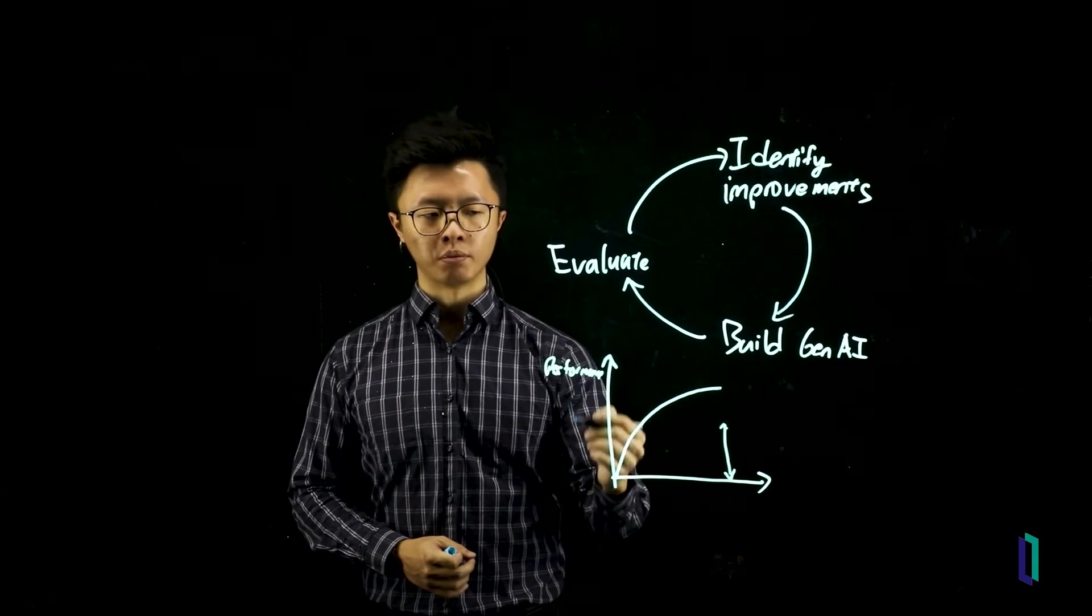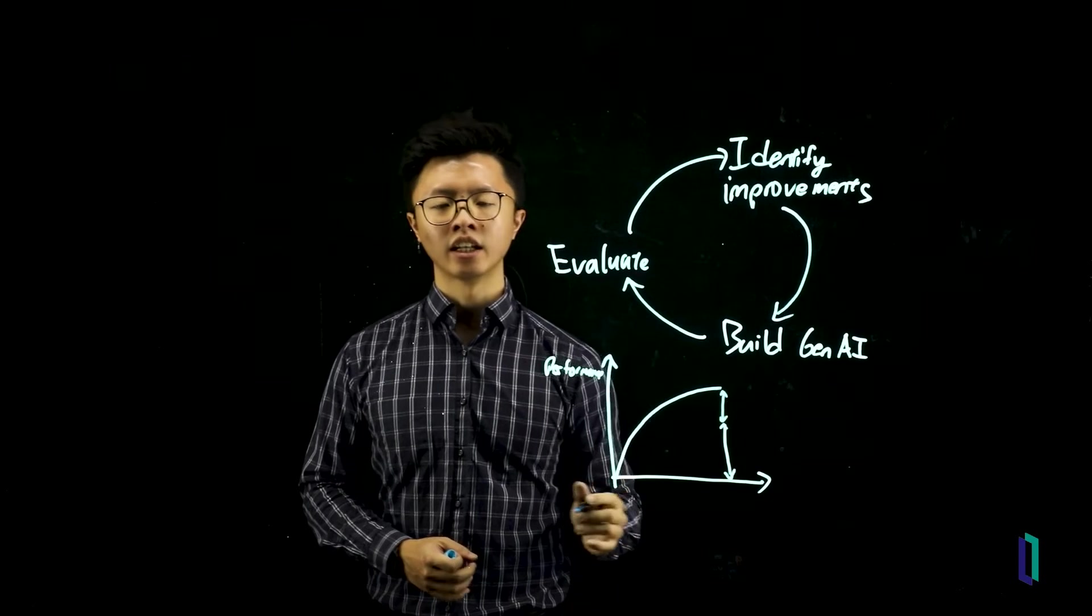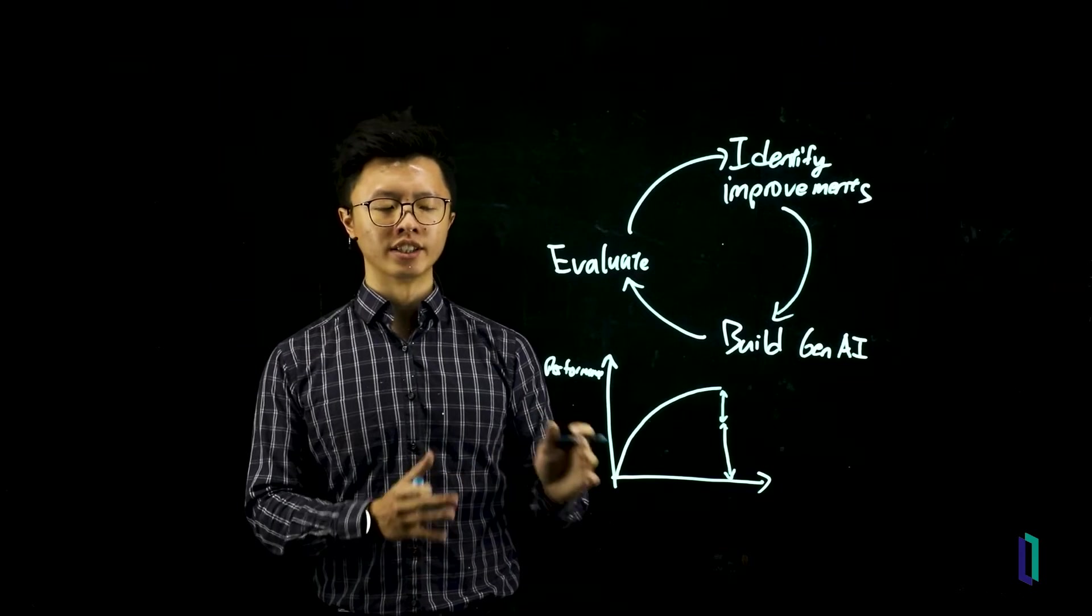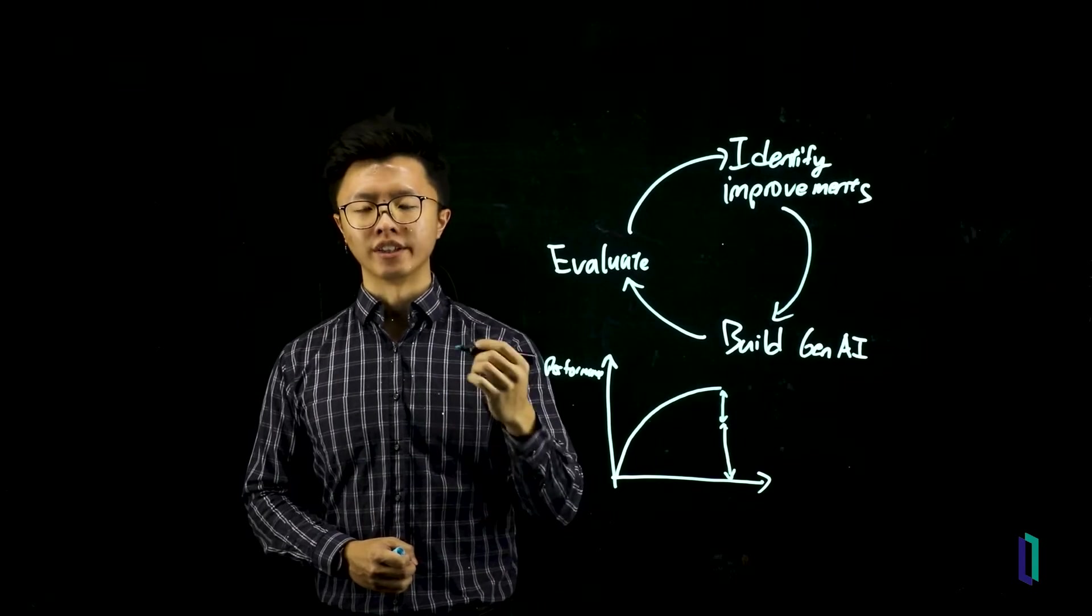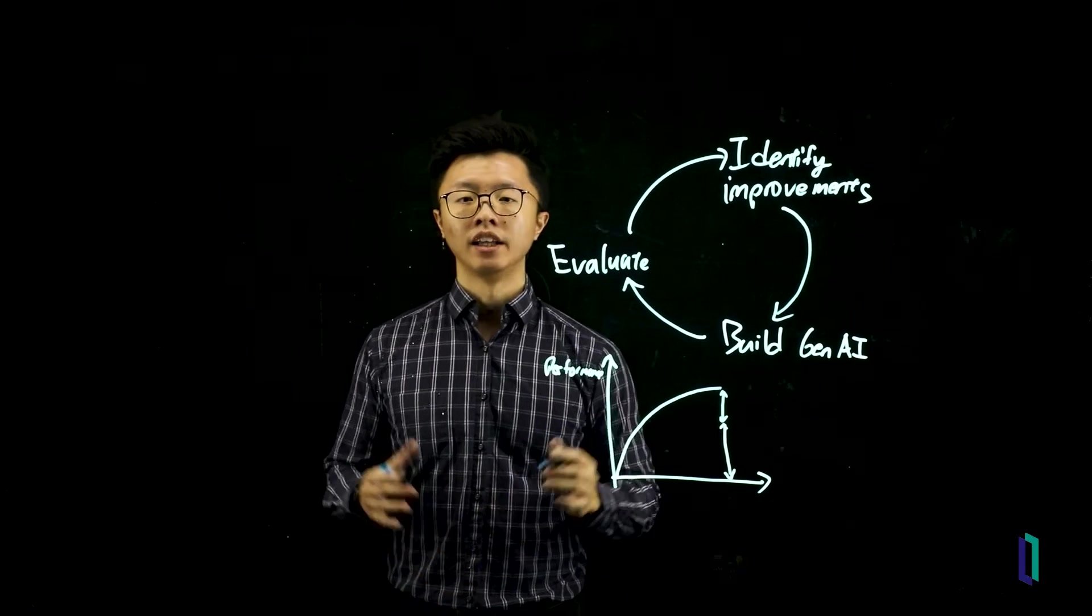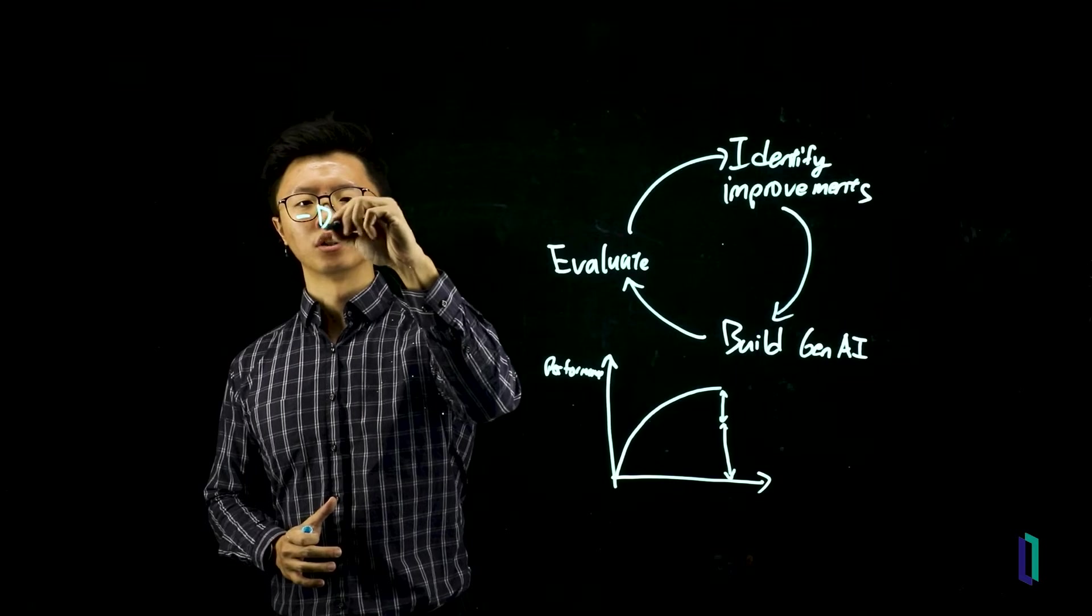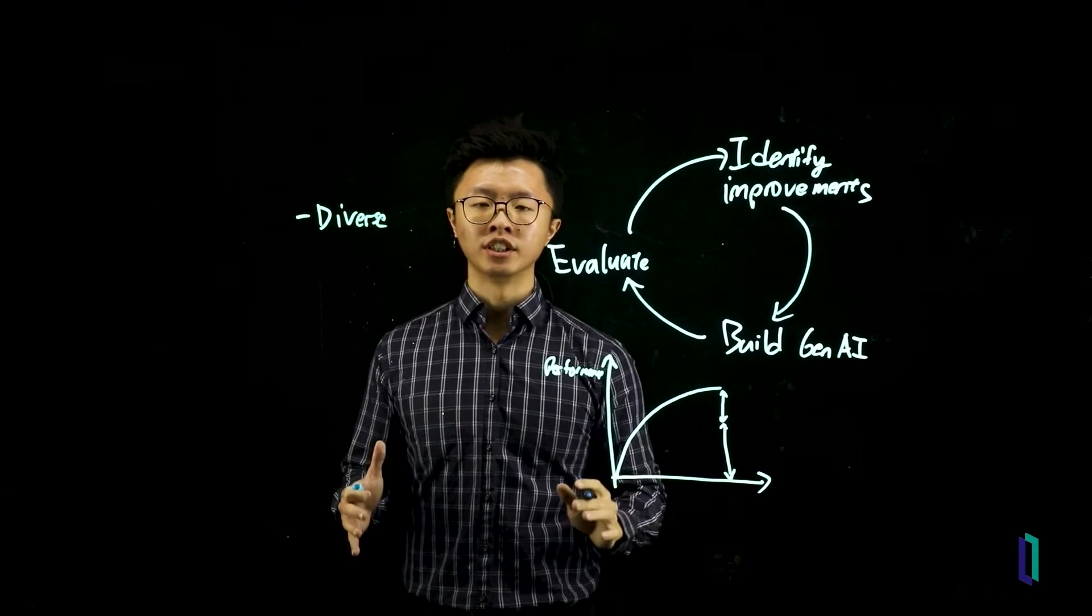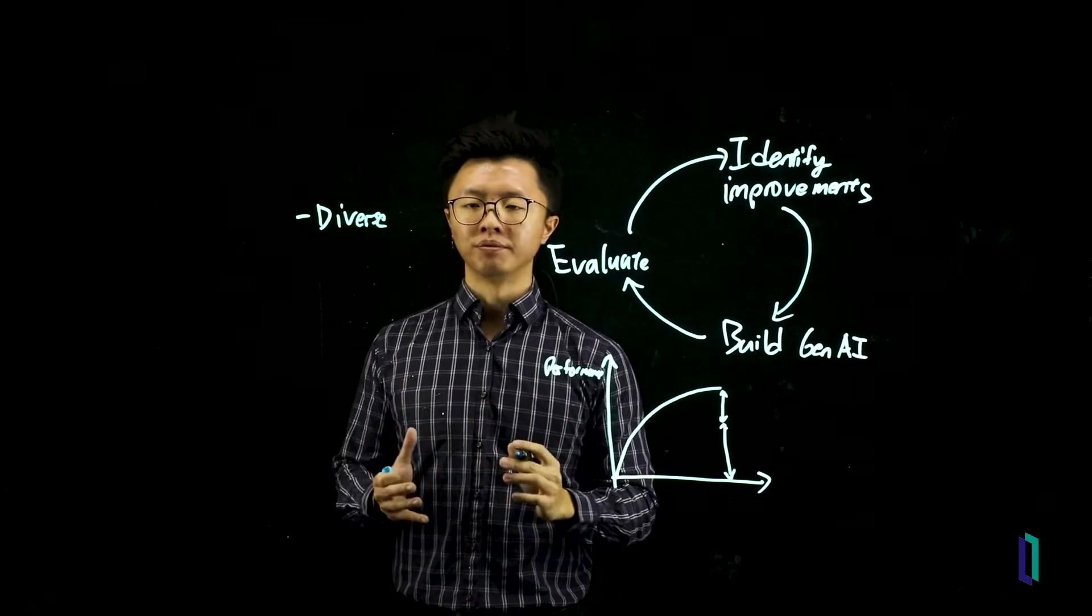...at the later stages of your project, it's important to use the same evaluation data set in order to squeeze that extra 3% to 5% performance in your system. And so you can also iteratively build your evaluation data set over time. Now, a few things about your evaluation. First, you want it to be diverse. It should be sufficiently diverse across the set of tasks that you need your Gen AI to achieve.